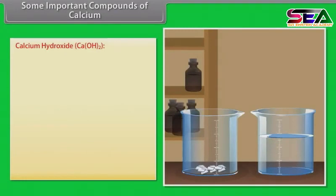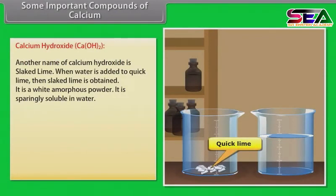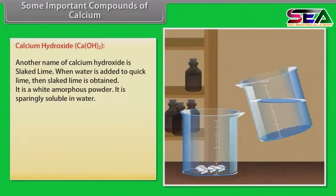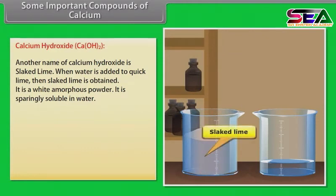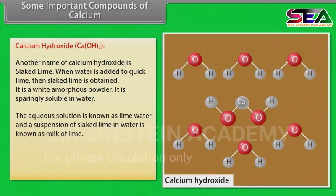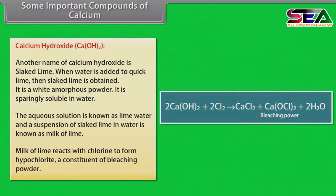Calcium hydroxide, another name of which is slaked lime, is obtained when water is added to quicklime. It is a white amorphous powder that is sparingly soluble in water. The aqueous solution is known as lime water, and a suspension of slaked lime in water is known as milk of lime. Milk of lime reacts with chlorine to form hypochlorite, a constituent of bleaching powder.